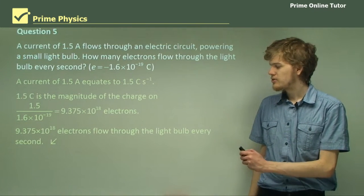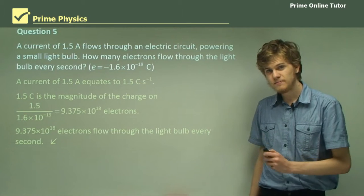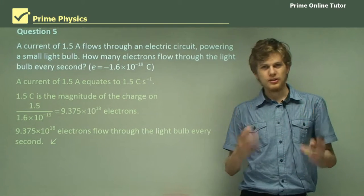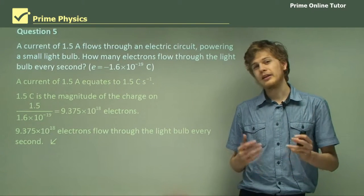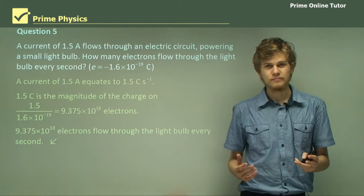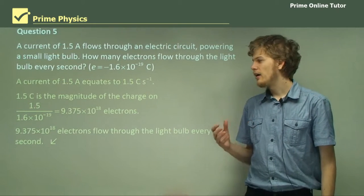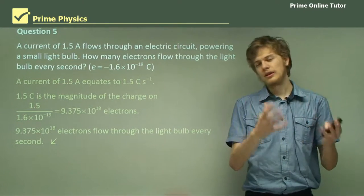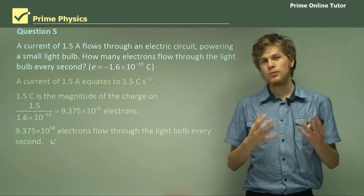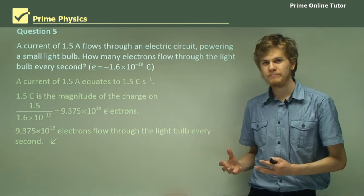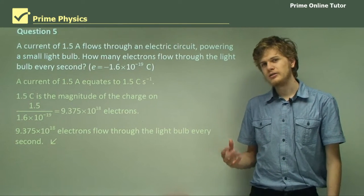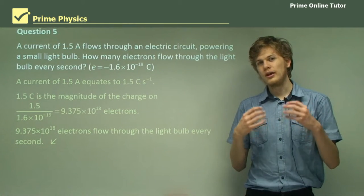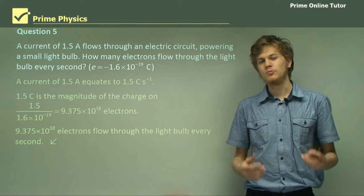That's the end of the questions. We've learned about electric current and electric charge. Remember that electric current is the rate of electric charge per time. In the next section, we'll be looking more at how electric current works.